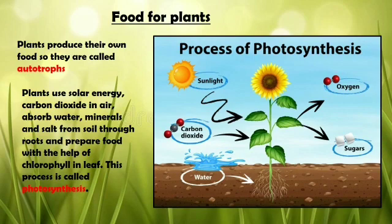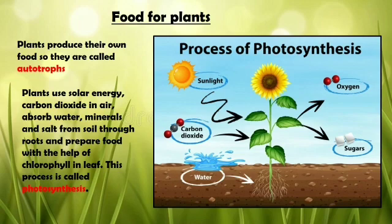Now let's see how plants eat food. Each part of a plant does one or the other activity. Plants are called autotrophs because they produce their own food. Plants use solar energy, carbon dioxide from air, water, minerals and salts from the soil through roots, and prepare food with the help of chlorophyll in the leaf. This process is called photosynthesis.